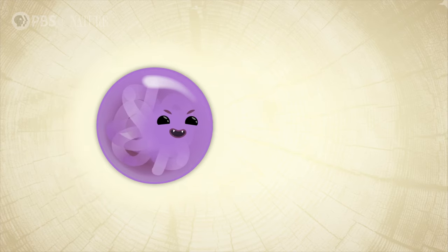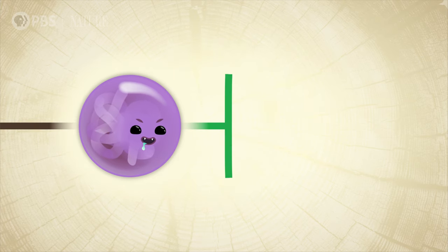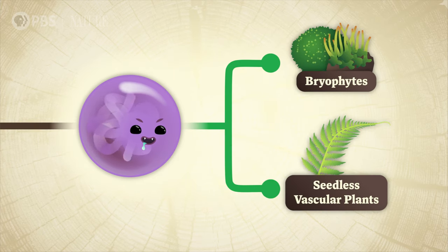Remember that tiny alga whose tasty snacks started the development of all the plant life on Earth hundreds of millions of years ago? Well, the bryophytes and seedless vascular plants were some of the first plants to arise from that event, and many of them still exist today. Some of the characteristics essential to plants as we know them first developed in these early plant types, and they can tell us a lot about how plants evolved over time — like how an older relative can tell you what life was like before cell phones, or the internet, or microwave popcorn.